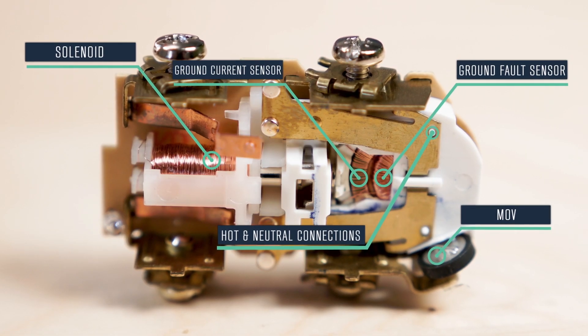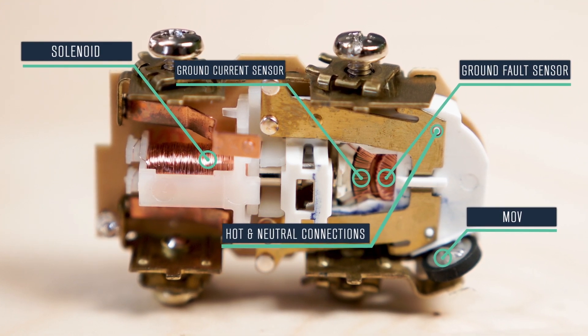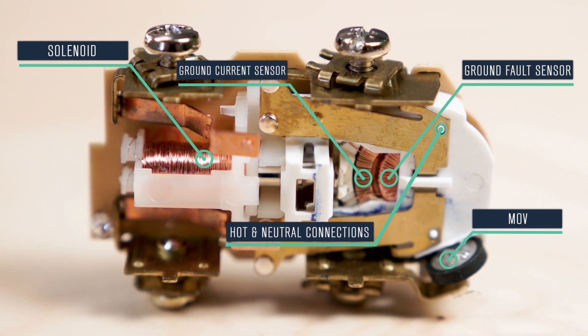There is a second toroid used as a current sensor in the GFCI. Judging by comments we've seen on forums, there is some confusion about its purpose and how it works.